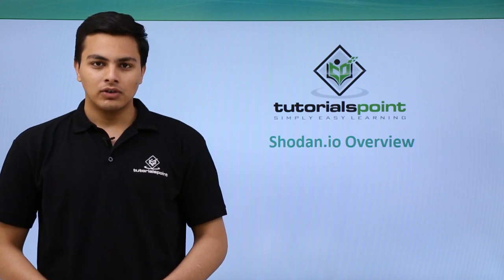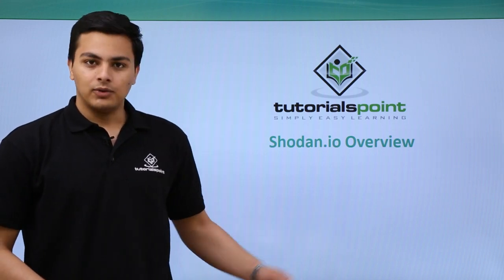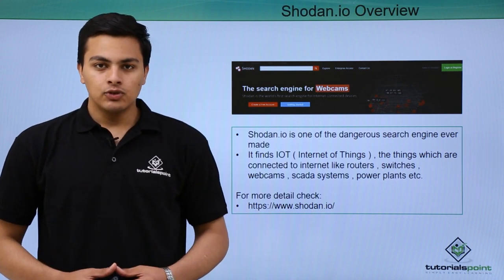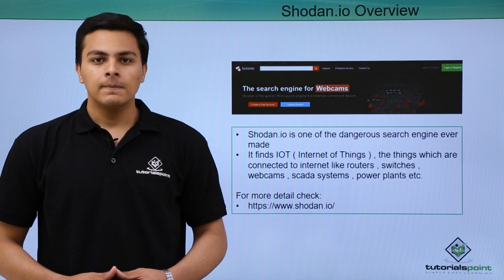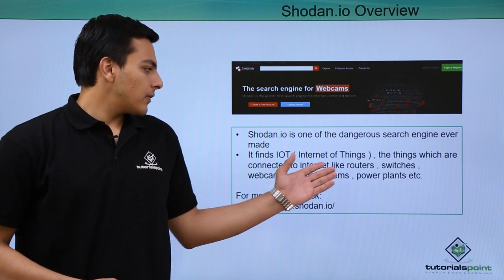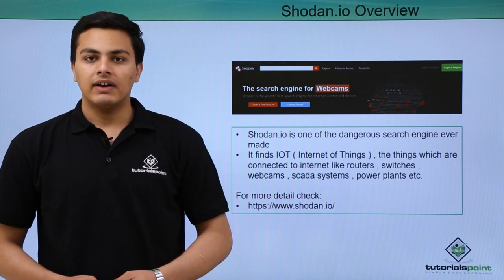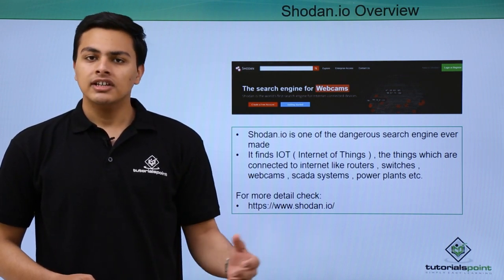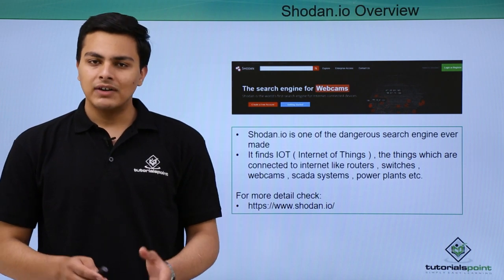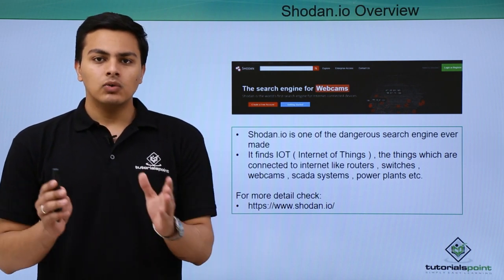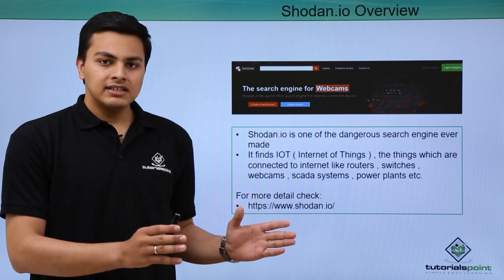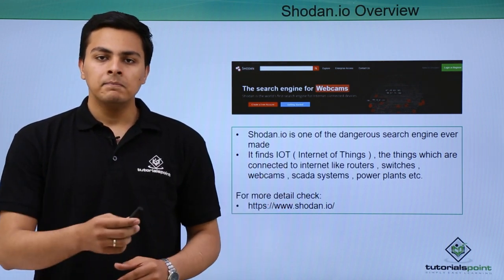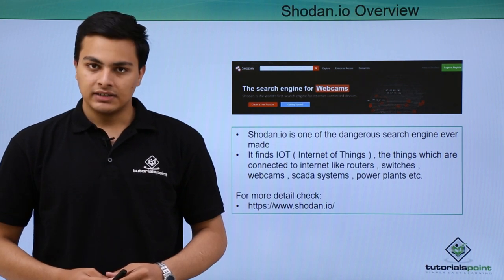Let's talk about Shodan.io. Shodan is one of the most popular search engines used to find devices which are connected over the internet, such as IoT devices like webcams, routers, SCADA systems, and power plants. Shodan is different from Google because Google finds web pages, whereas Shodan tries to find devices connected over public IP addresses.